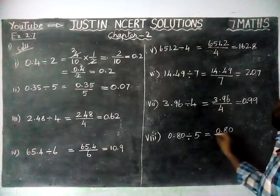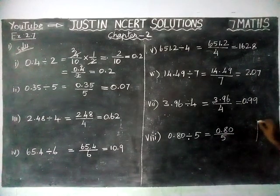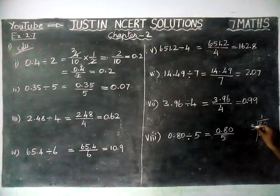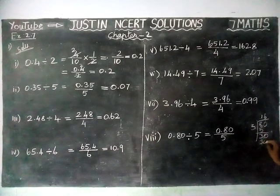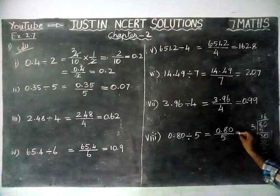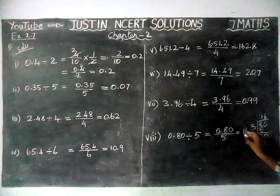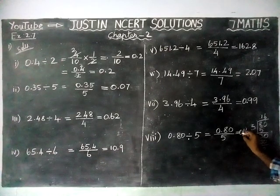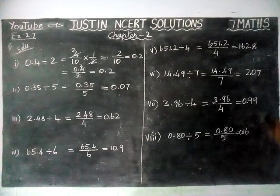Eighth question: 0.80 divided by 5. Treat as 80 divided by 5. In 8, 1 five is 5, remainder 3. Take 30: 6 fives are 30, remainder 0. Answer is 16; with 2 decimal points, the answer is 0.16.